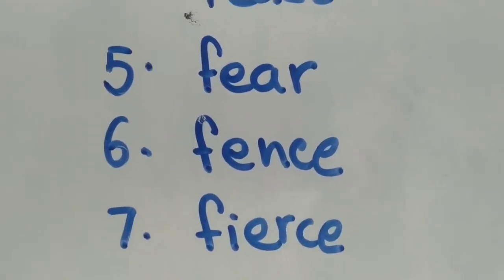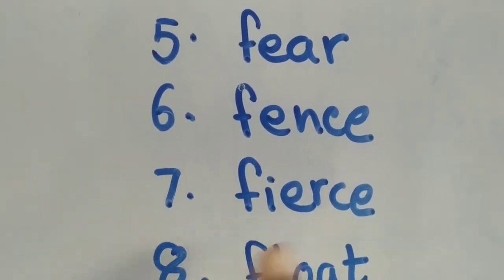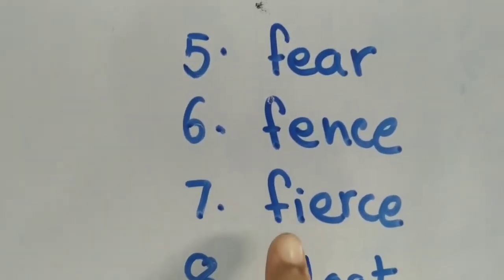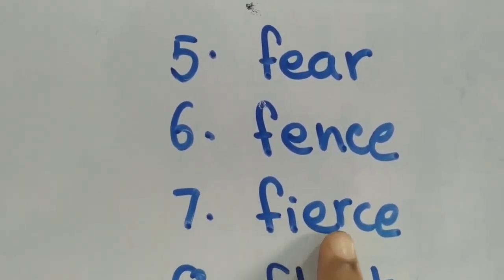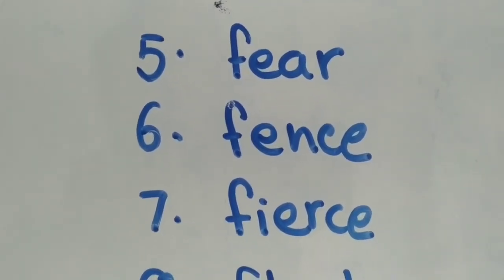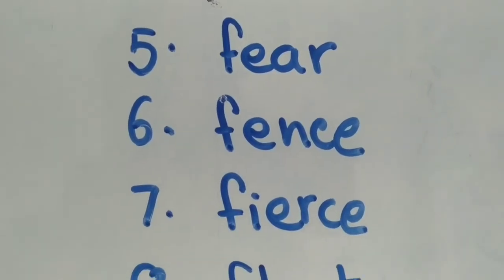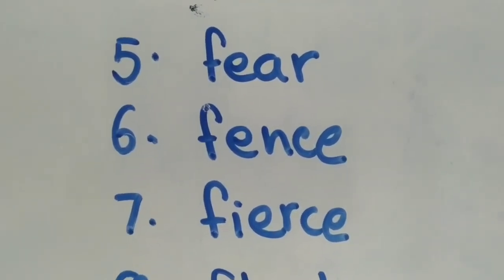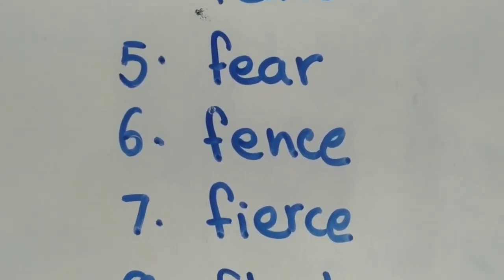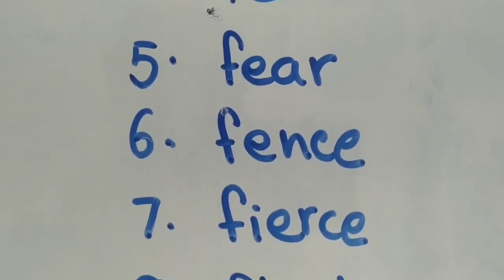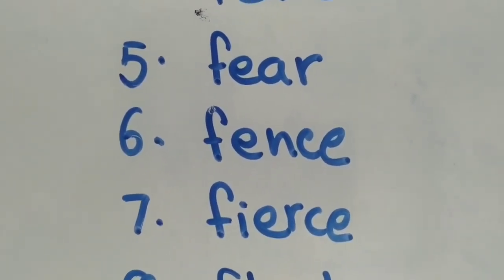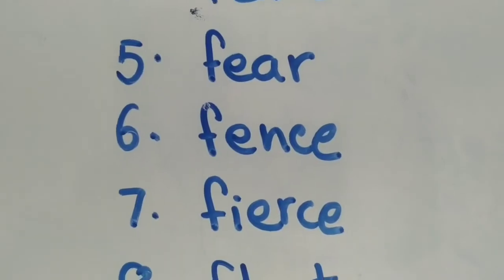Next is number seven. Fierce. How do we spell? F-I-E-R-C-E. Fierce. Again F-I-E-R-C-E. Fierce. Lion is a fierce animal. That means very violent. Fierce means very violent.